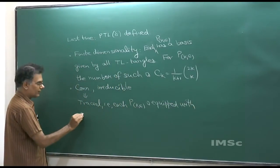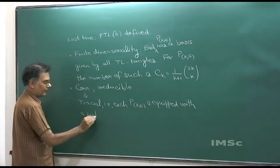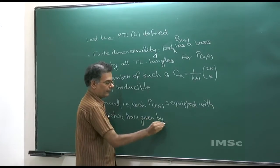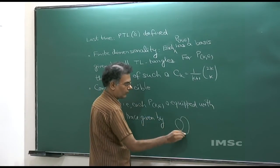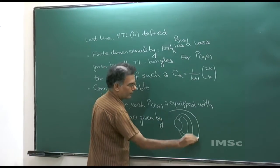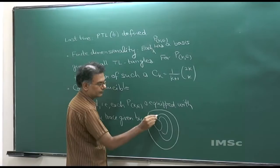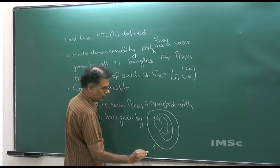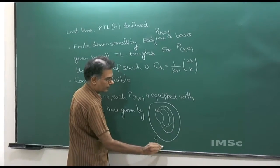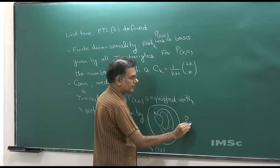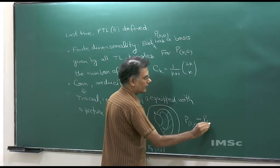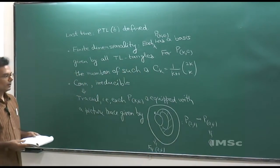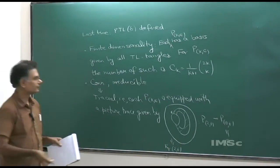Let me describe the picture trace, given by a tangle. For the 2-plus case, this gives a function from P_{2+} to P_{0+}, and by connectedness, this is identified with the complex numbers. So it gives you a linear functional on that space, which is actually a trace — it is tracial.